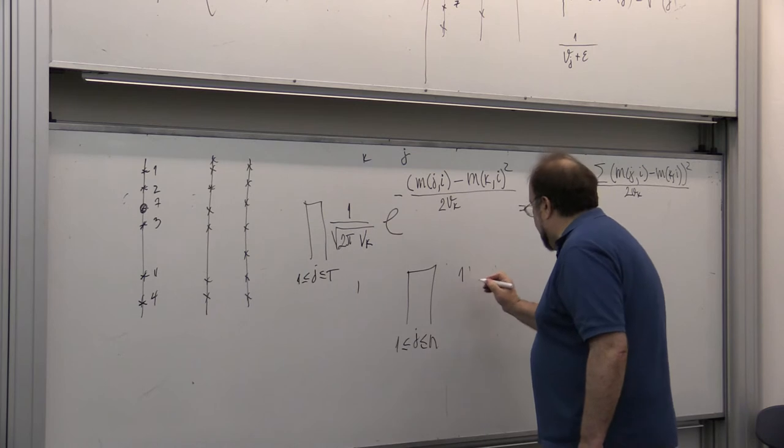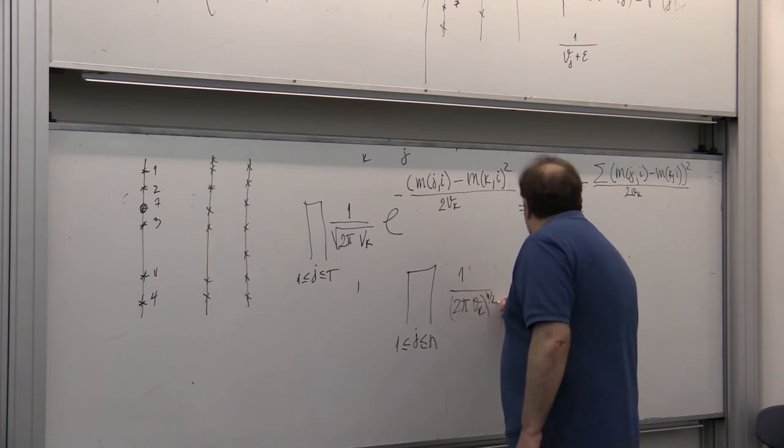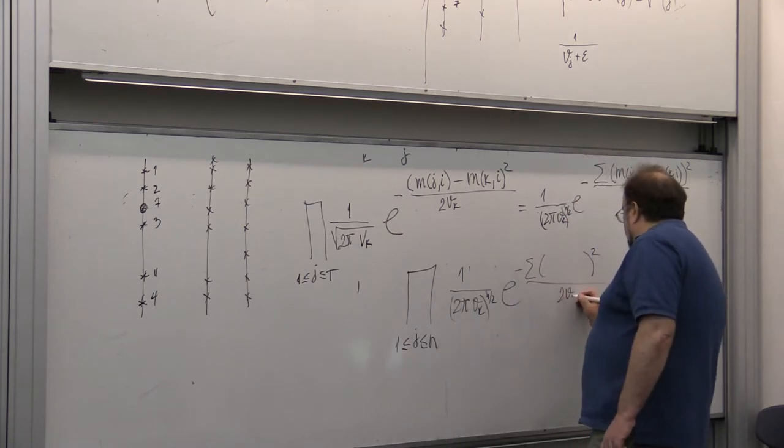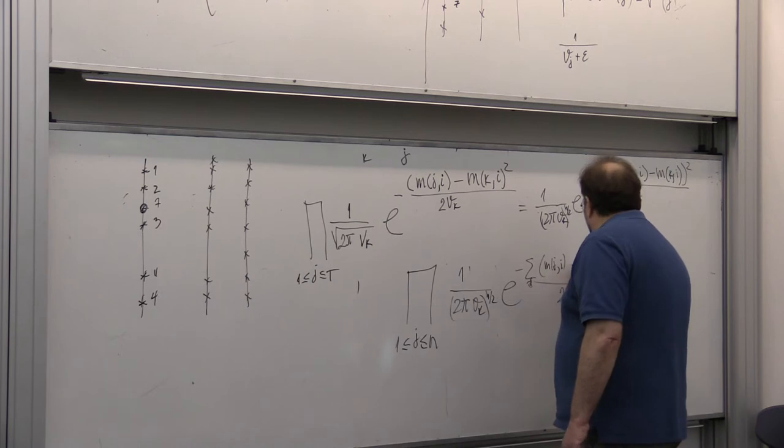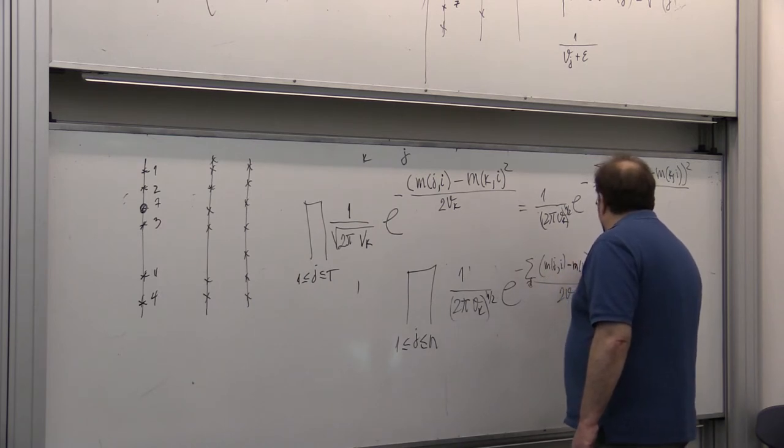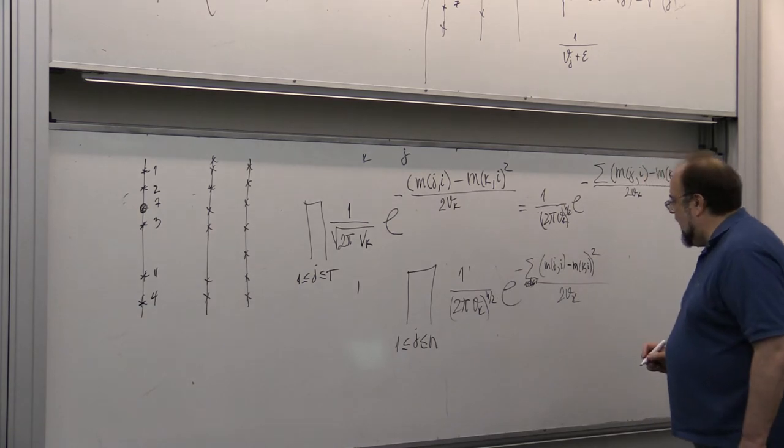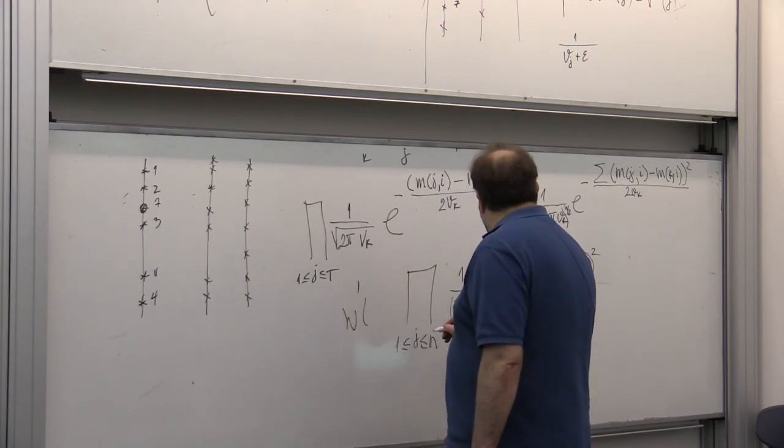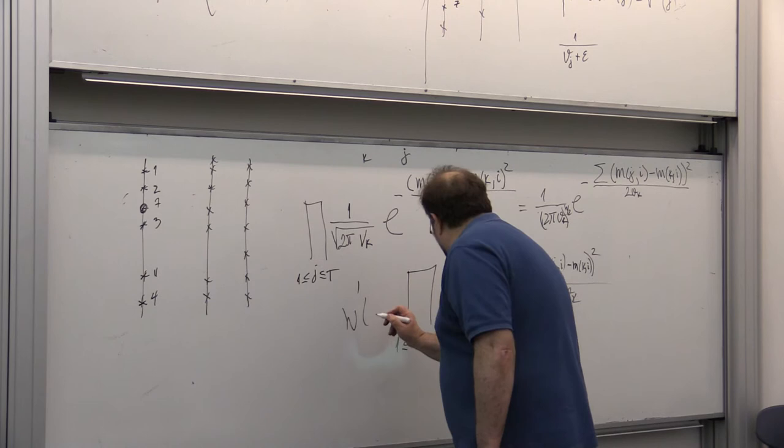So, and then here we will have 2 pi vk to the power n over 2 times e to the, and then this difference square over 2 vk. So here is mji summation over j, over i, and then minus mki from 1 to t. And lo and behold, this should be w of the sensor k.